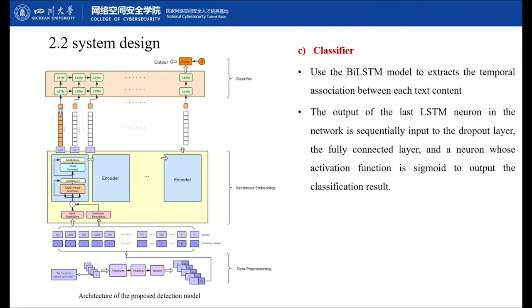Finally, after the sentence embedding layer, we use a BiLSTM model to extract temporal associations between each text content. The output of the last LSTM layer in the network passes sequentially through a dropout layer, a fully-connected layer, and a neuron whose activation function is sigmoid to output the classification result.